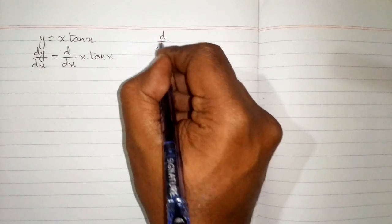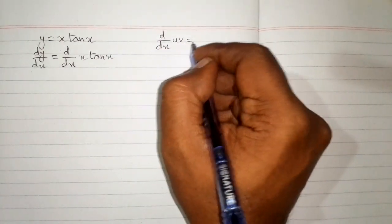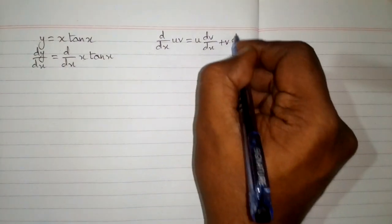We will use the product rule of differentiation, which is d/dx of uv equals u times the derivative of v plus v times the derivative of u.